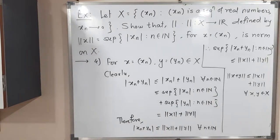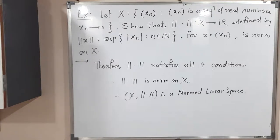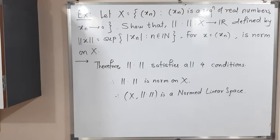Therefore, this norm satisfies all four conditions. So we have proved it is a norm on X, and we can declare it as a normed linear space.